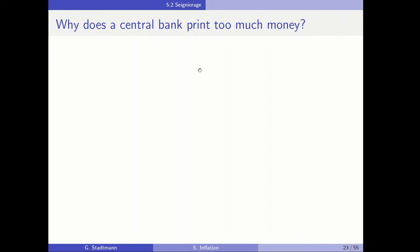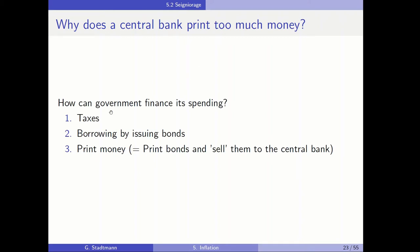This question is related to a different question: how can the government finance its spending? It can finance expenditures by taxes, by borrowing in the form of issuing bonds, or the third alternative is to print money. More precisely, the government can print bonds and sell those bonds to the central bank, and the central bank prints money. So the question of why the central bank prints too much money is related to why the government forces the central bank to print more money.